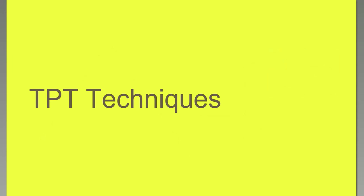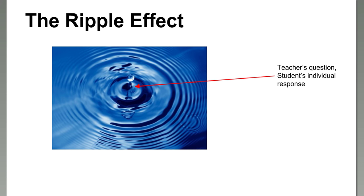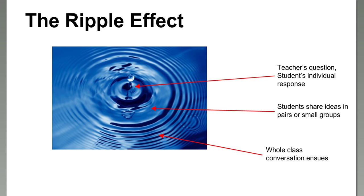The principle behind all of the techniques is something called the ripple effect, from the book. Imagine throwing a stone into a pond. The first plunk is the teacher's question and the student's individual response — the student has time to answer themselves, either in their head or on paper. After individual processing time, students share their ideas in pairs or small groups, which is the next ripple out. Then the whole class conversation is the smaller ripples spreading outward, starting with the individual.